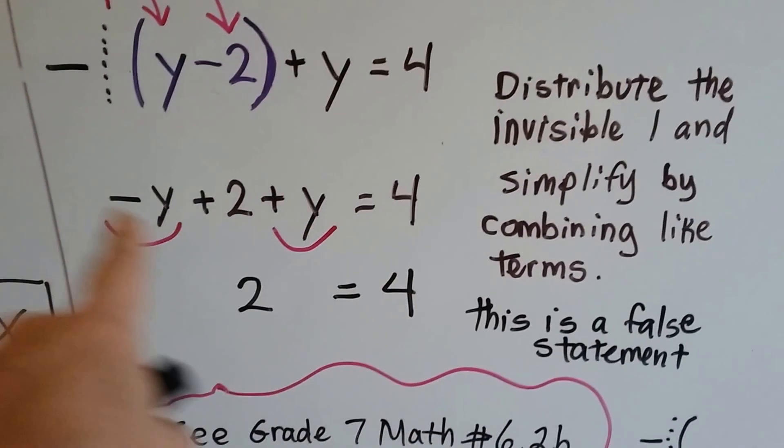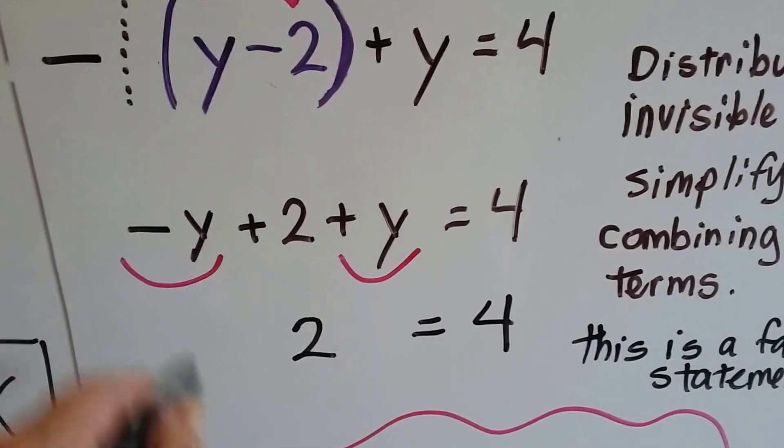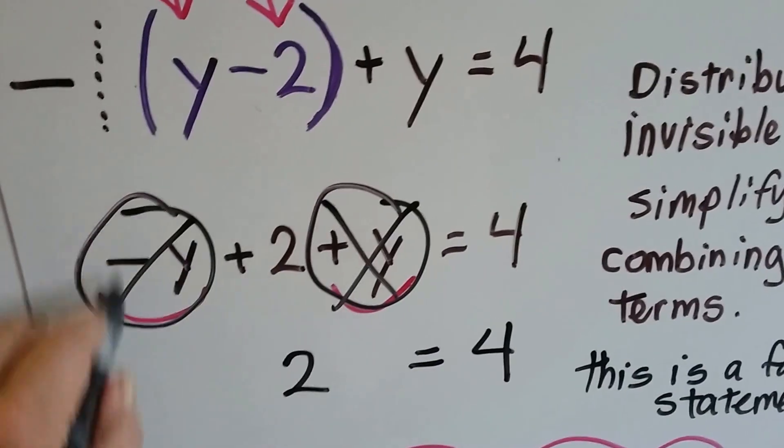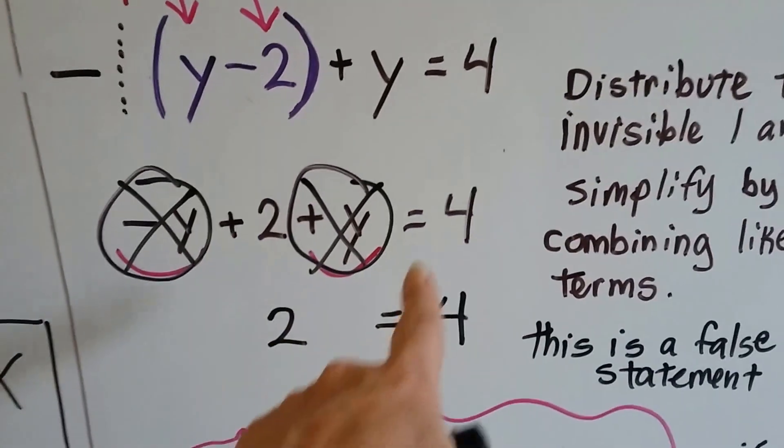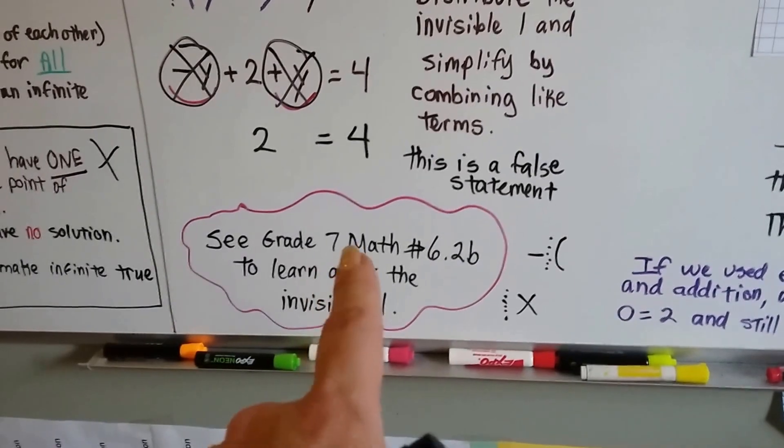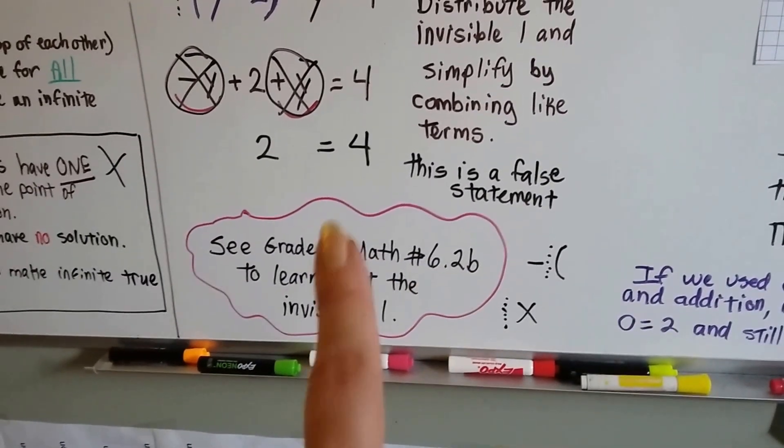Now we can simplify it by combining the like terms. This negative y and this positive y cancel each other out, don't they? Now we've got 2 equals 4. If you're really confused, I advise you to go back and watch in the playlist for grade 7 math, number 6.2b. Because I'm going to use this invisible guy a lot.